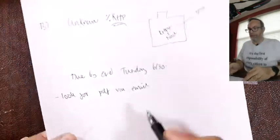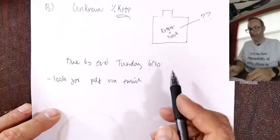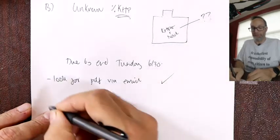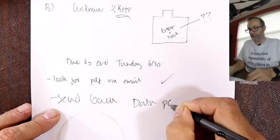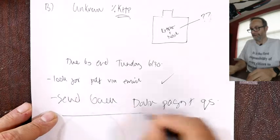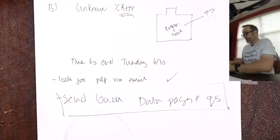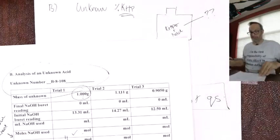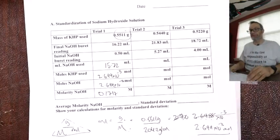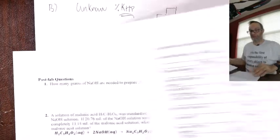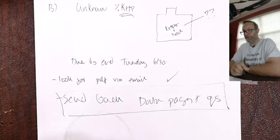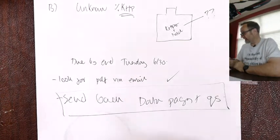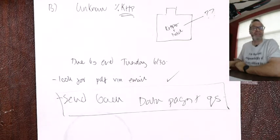Wrap up. Due by the end of Tuesday the 30th. I'll send you your assignment by email. Send back data pages plus questions. You have the two data pages - part one, standardization; part two, find the percent. And then the questions. So you're going to send me three pages back. I'll grade those. It's actually very easy for me to grade this one. Take your time.